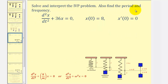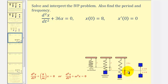We want to solve and interpret the initial value problem, and find the period and frequency. Looking at the given information, the differential equation fits the form for free undamped motion. Since X of zero equals eight, the initial displacement is eight units below the equilibrium position — the mass is stretched eight units downward. And since X prime of zero equals zero, the initial velocity is zero, meaning the mass is simply released from that position without any upward or downward push.